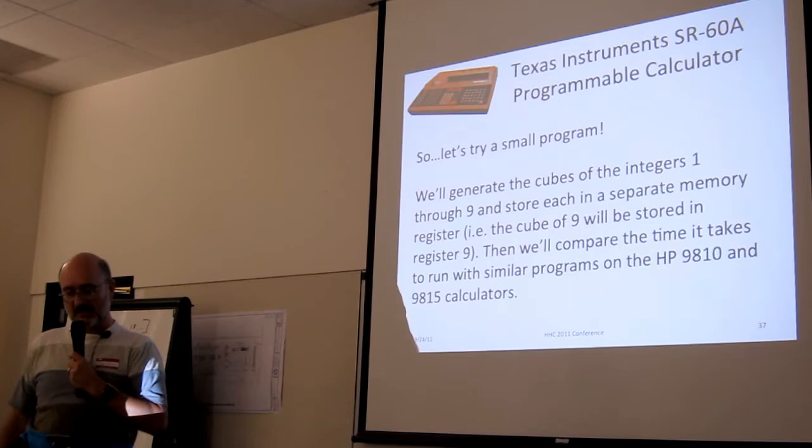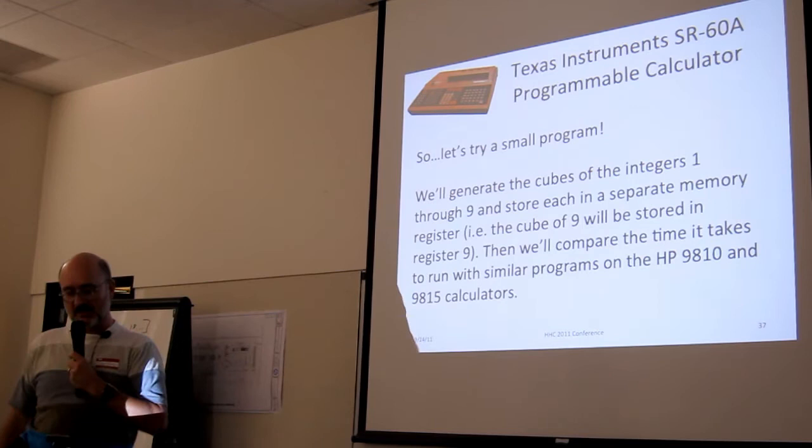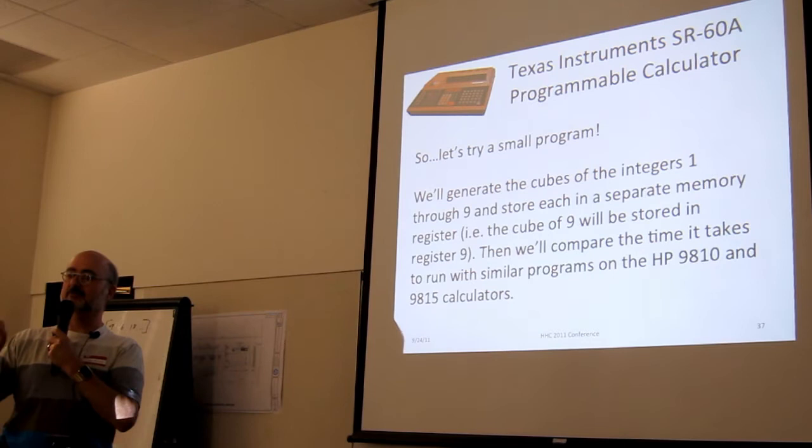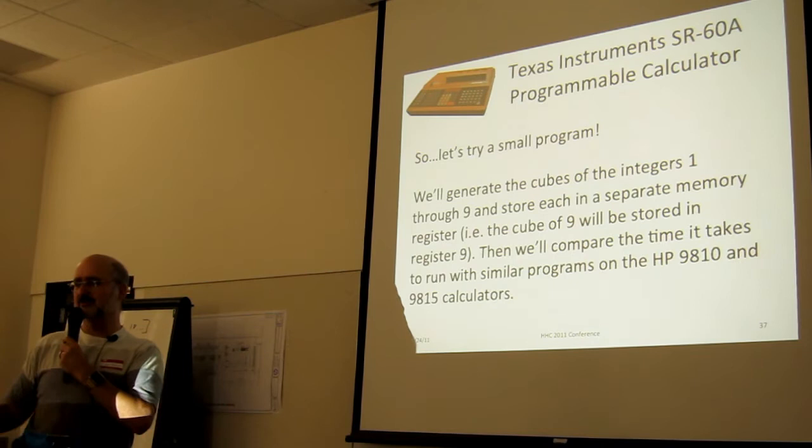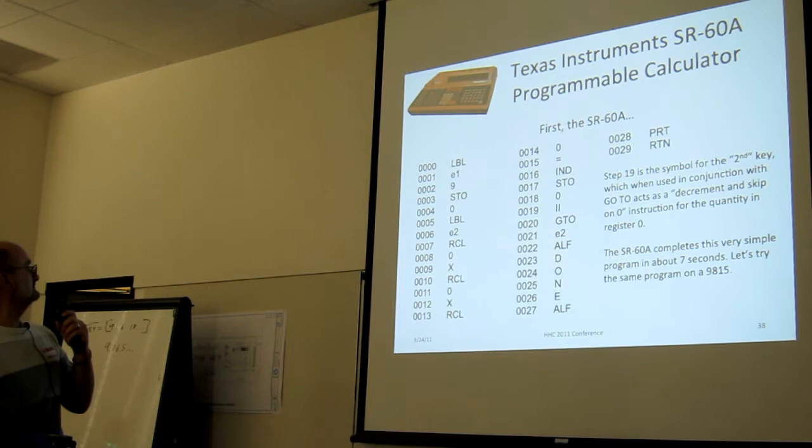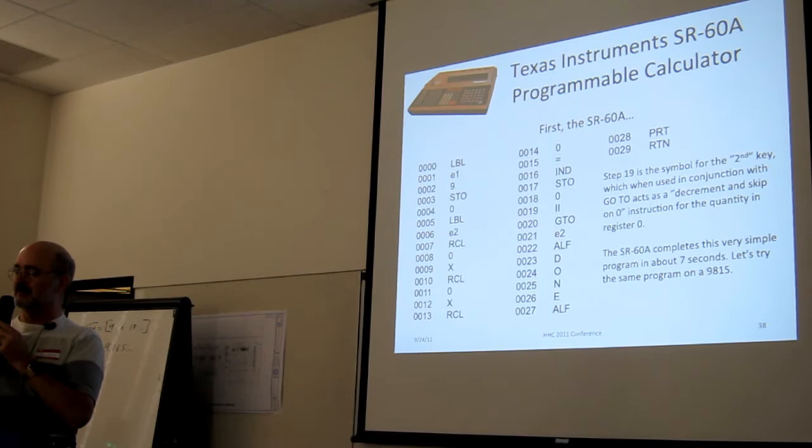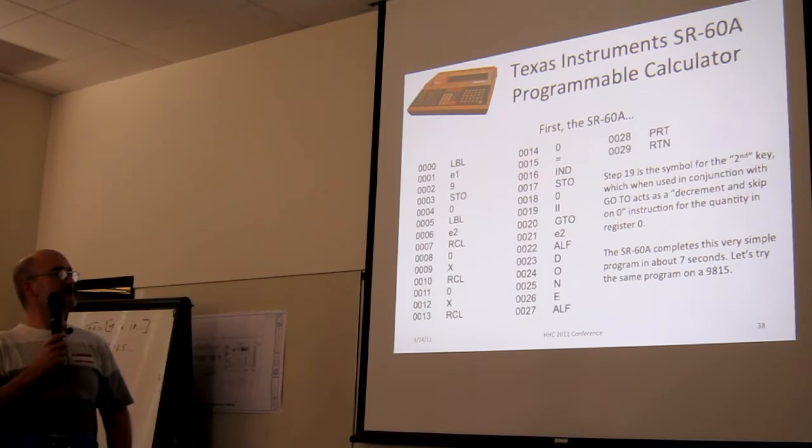So let's write a program. What I did, I wrote a really little program and it iterates through the integers or decrements I should say, 9 to 1, computes the cube of each integer and puts that into the like numbered register. So the cube of 9 we put in register 9, the cube of 8 in register 8. Trivial stuff. Let's see how long that takes. Here's the program in the SR 60 and you'll actually notice here I did the cube by recall recall recall multiply because the SR 60 like a lot of old HP calculators doesn't give integer answers to raising integers to integer powers. Simple program takes about seven seconds to run.